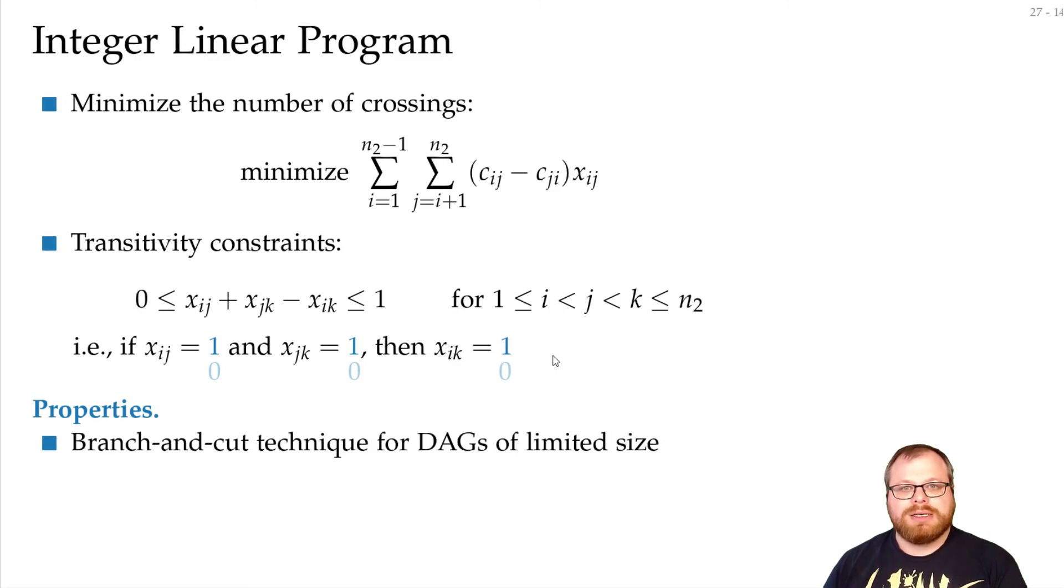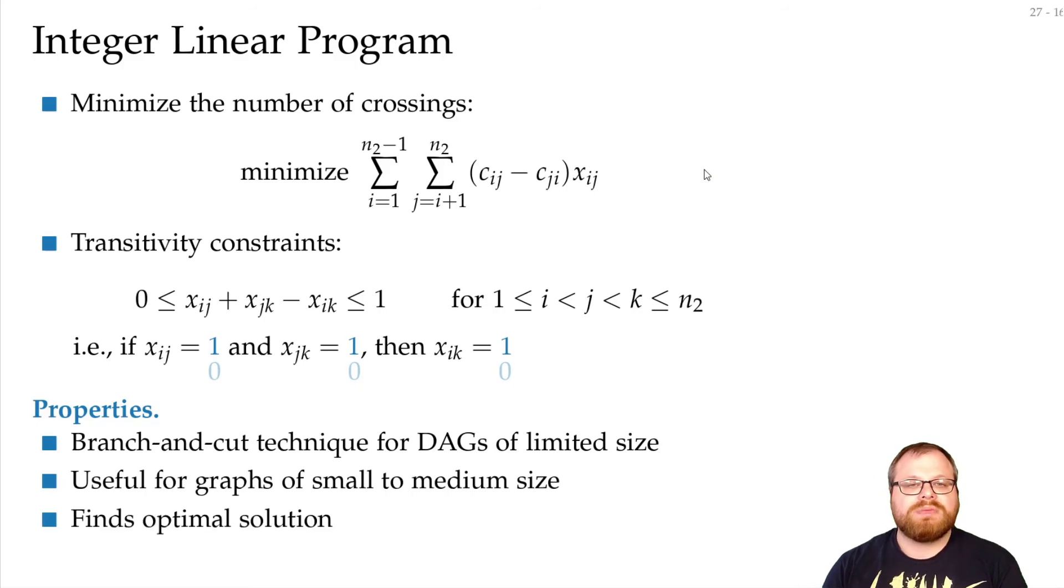The nice thing is, we can use branch and cut techniques for DAGs of limited size, and this is very good if our graphs have only small to medium size. We get an optimal solution from this. But the bad thing is we cannot guarantee that we get a solution in polynomial time, and if we have large graphs, this might take many hours or days or weeks or even longer.